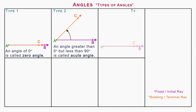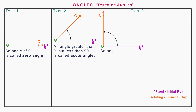Type 3: Right angle. On rotating the terminal ray in anti-clockwise direction as shown on the screen, the angle formed is called a right angle. An angle of 90 degrees is called a right angle.